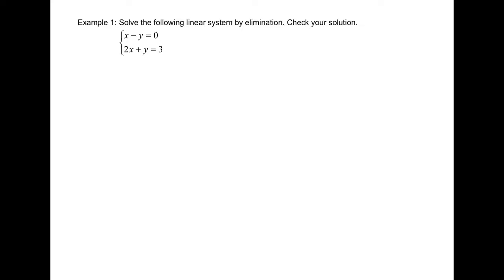Let's look at Example 1. First, we label equation 1 and 2 and verify whether or not the equations are already lined up. We can check the x-term, then the y-term, the equal sign, and the constant terms — that means they are already lined up. Step 2, we need to make sure one of the variables has the same coefficient. When we talk about the same coefficients, we only talk about the numbers without the positive or negative sign.